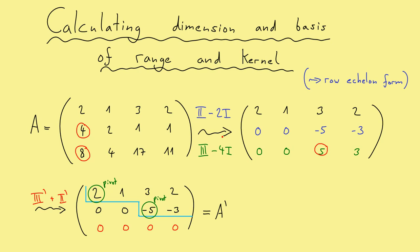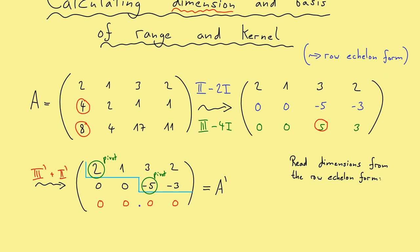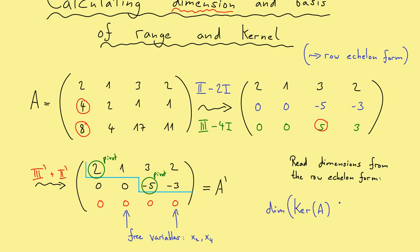An important thing to remember: in the moment you reach the row echelon form, you immediately have the two dimensions you want to calculate. That's because if you want to solve a system of linear equations, you would put all the free variables on the right — and this is also how you get to the kernel of a matrix. The free variables are the variables that correspond to columns where there is no pivot. In this example, you find one free variable in this column and one free variable here — in other words, x2 and x4 are the free variables. These free variables show you the degrees of freedom in your kernel, so the dimension of the kernel is 2.